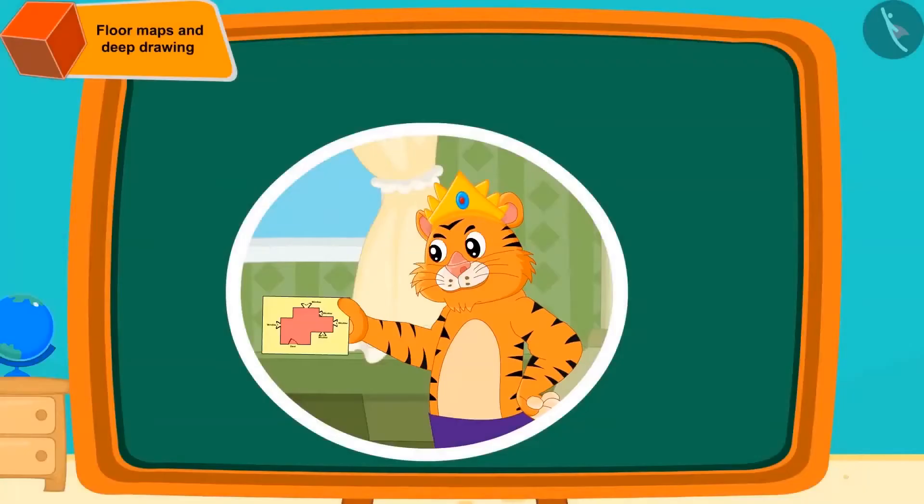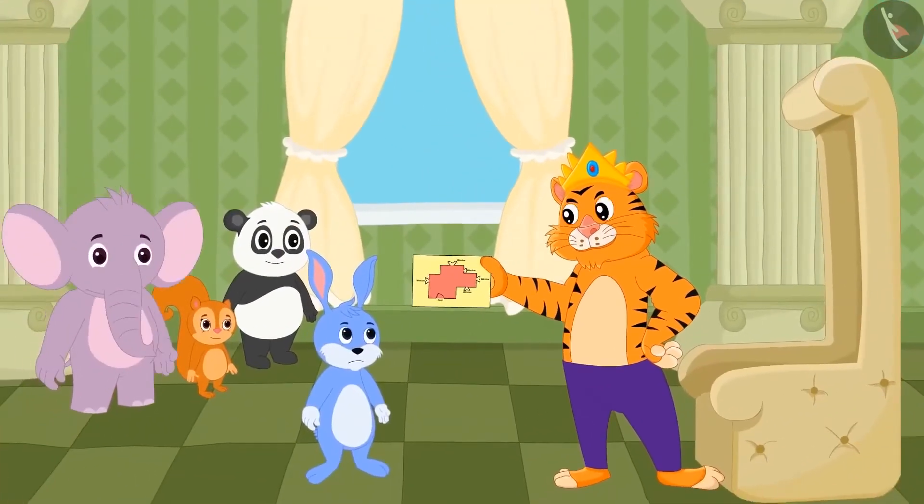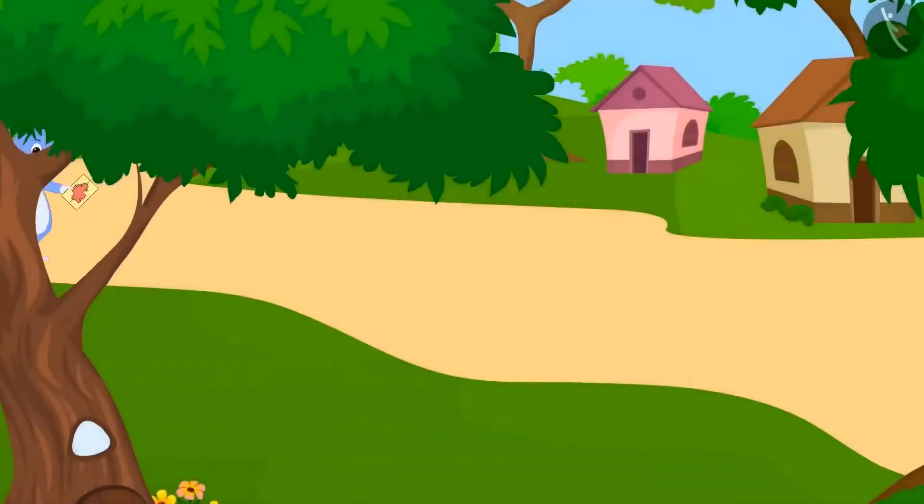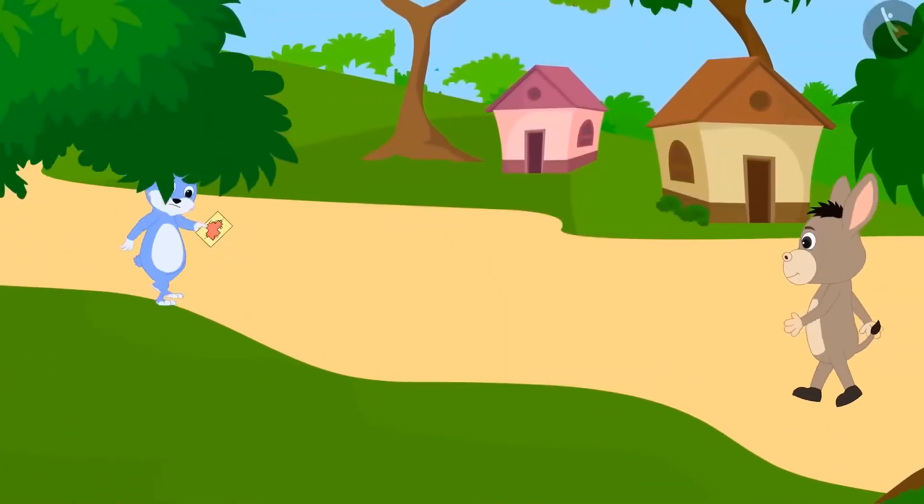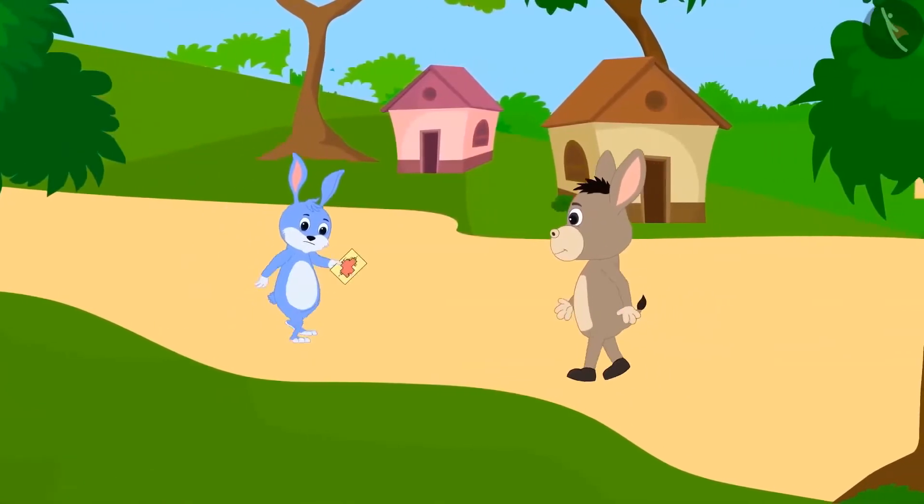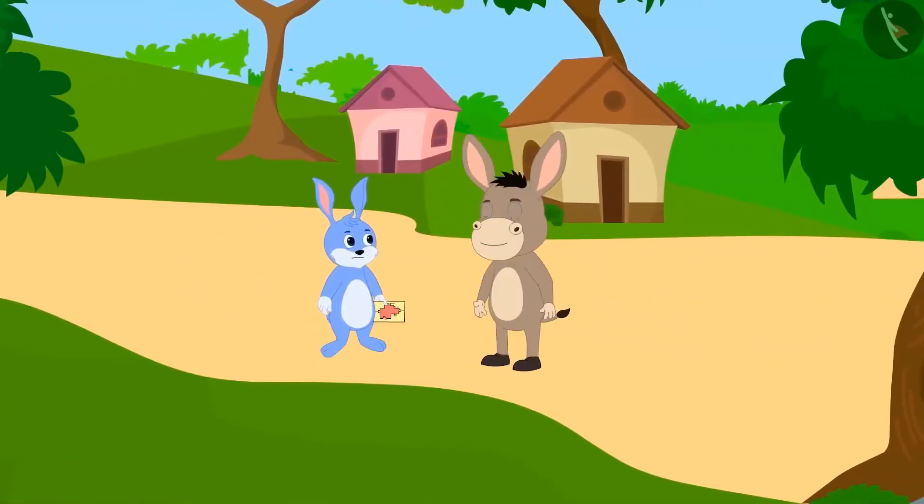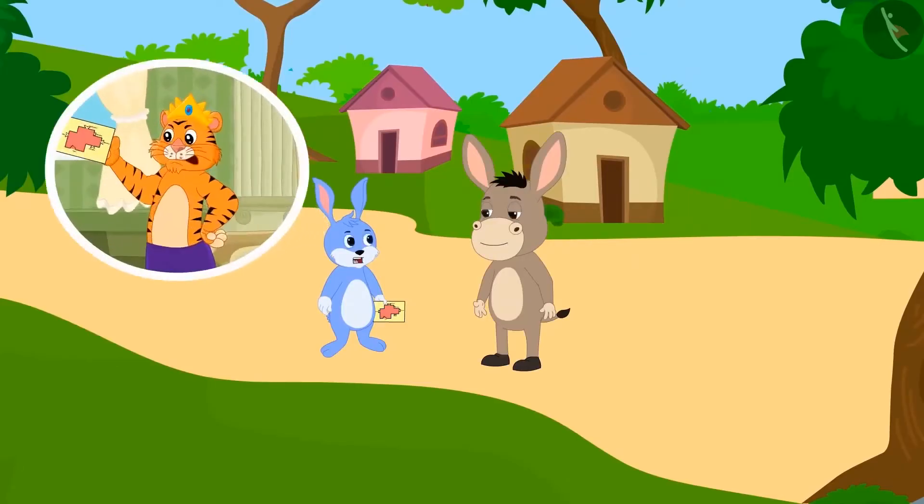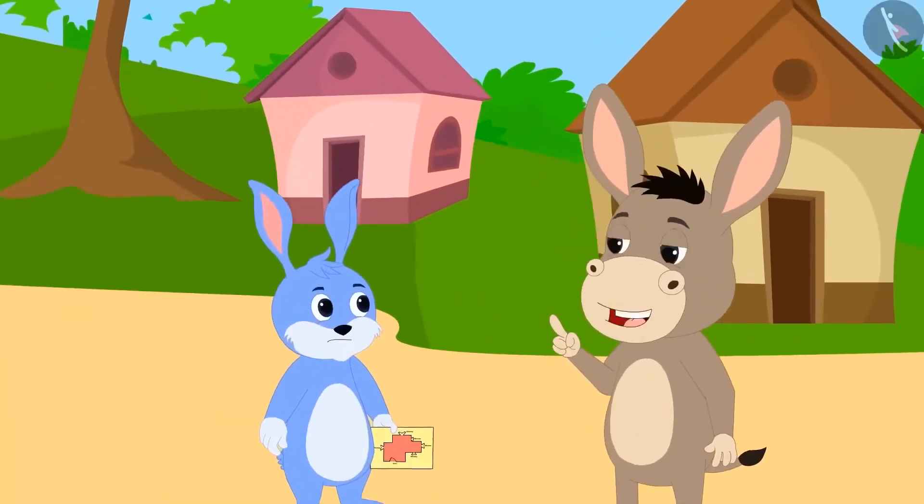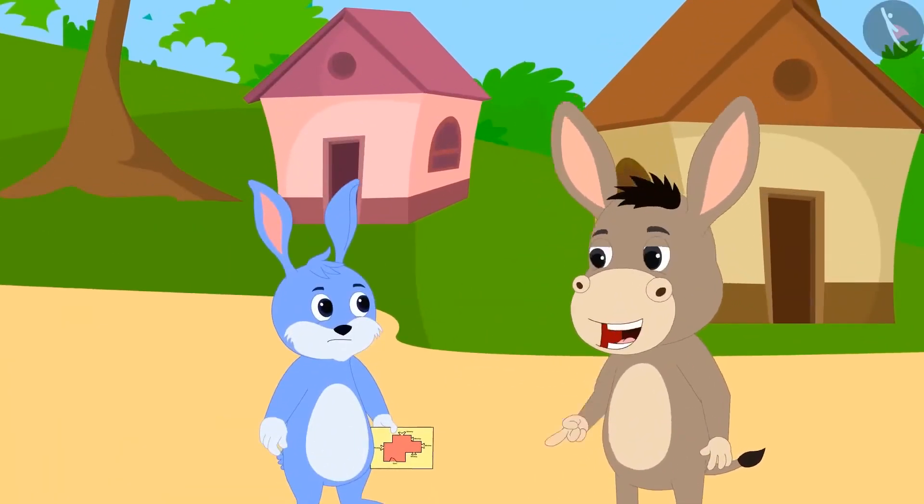The king liked the floor map that Bunny had made, but could not find out how the room would look like and how high the windows would be from the floor map, so he did not reward Bunny. Bunny was returning home with a sad face when he saw Bholla the donkey on the way. Bholla asked the reason for Bunny being depressed.